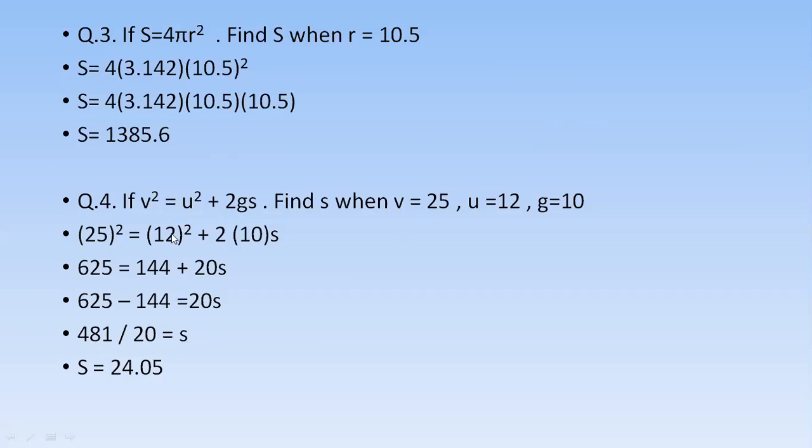12 square, you need to put it in the bracket, I am repeating it again, 144 plus 20s. 2 times 10 times s is 20s. First you will take 144 towards the left. It will be subtracted by 625. It will become 481. And then 20 is multiplied by s, so it will divide 481. So 481 upon 20, that means 24.05.